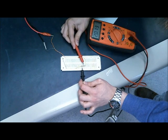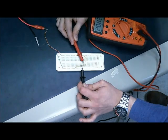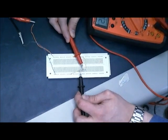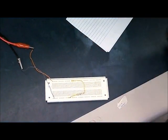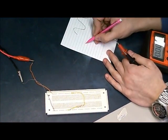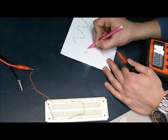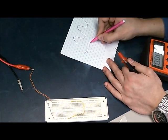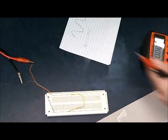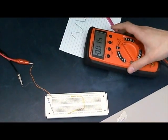We're going to record that. This is our VDC: 2.08 volts. The next measurement we're going to take is the AC voltage.